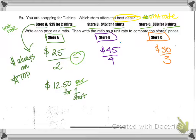So that doesn't really tell me much yet because I can't compare to everything else yet. So I'm going to look at store B. Store B, if I do 45 divided by four in my calculator, I get $11.25. So that means it's $11.25 per shirt. And then store C, 30 divided by three, gives me $10 per shirt.